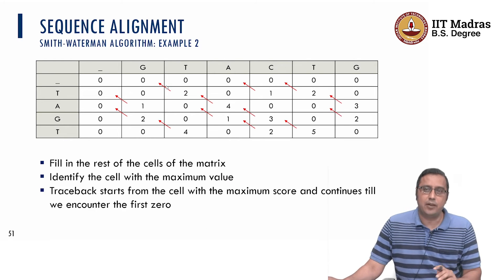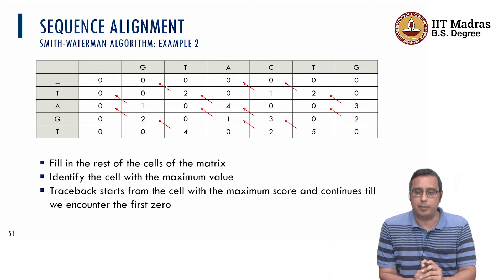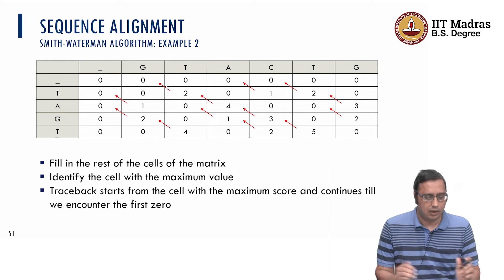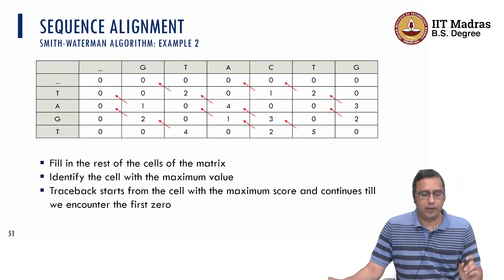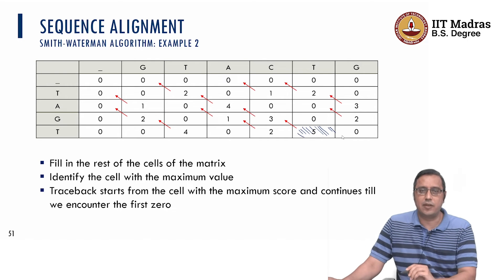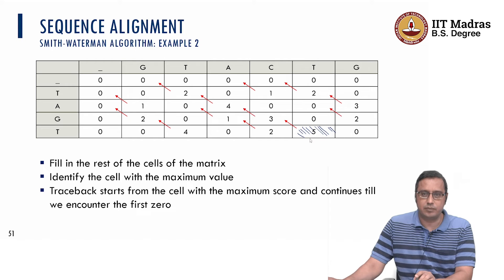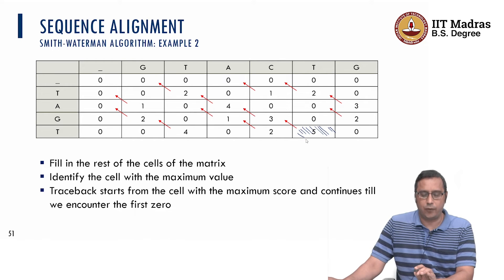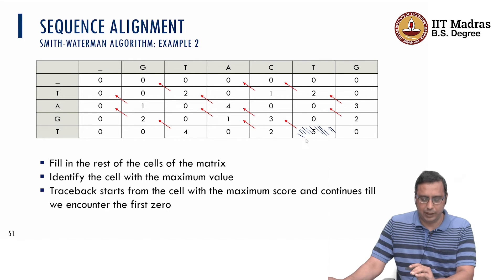In the same manner we fill the rest of the cells of the scoring matrix. Now we identify the cell with the maximum value — which is 5 — and that is our starting point. We then trace back from the maximum-scored cell and continue until we encounter the first 0.